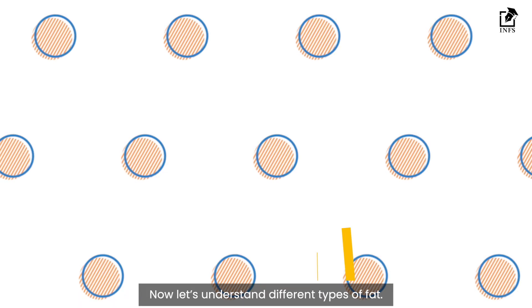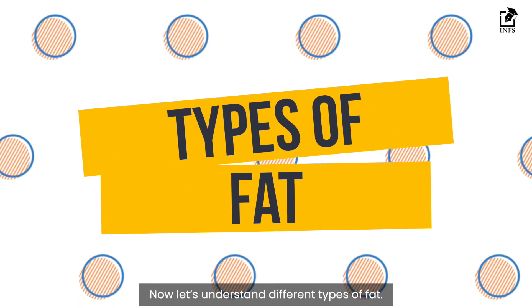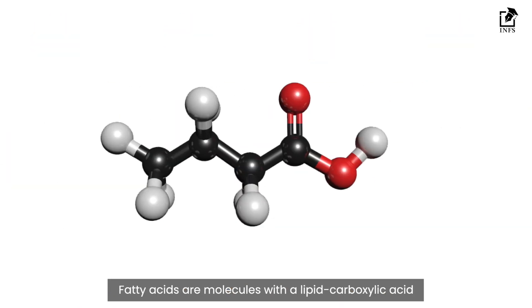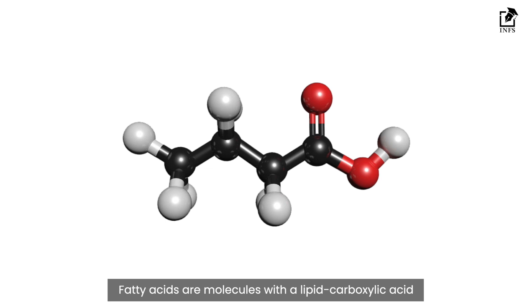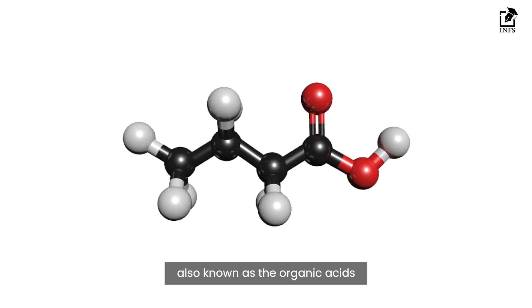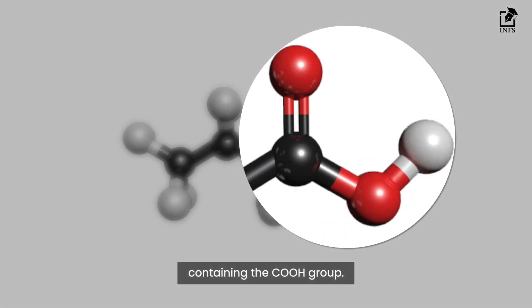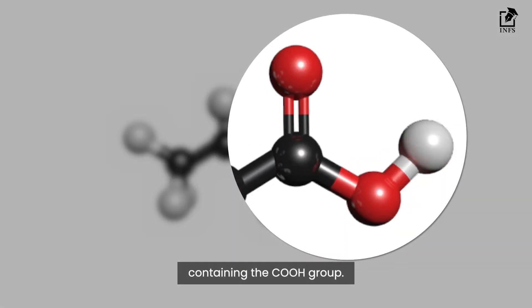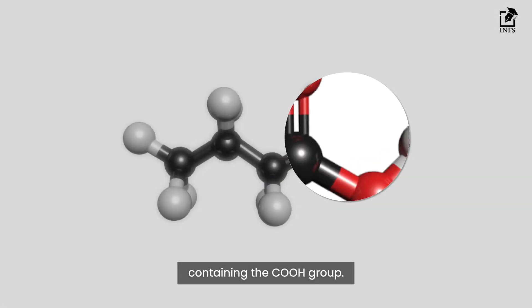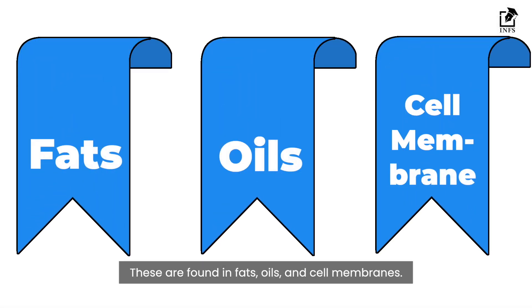Now let's understand different types of fat. Fatty acids are molecules with a lipid carboxylic acid, also known as the organic acids containing the COOH group. These are found in fats, oils, and cell membranes.